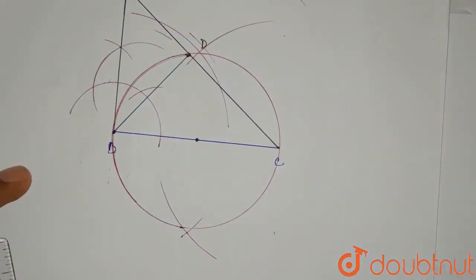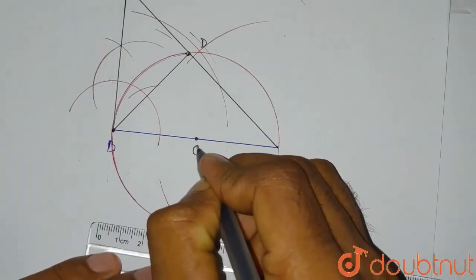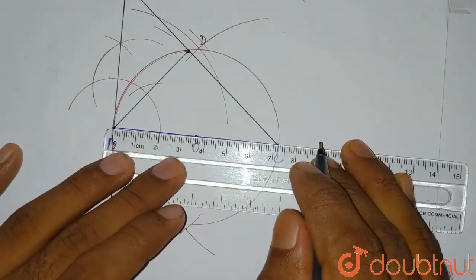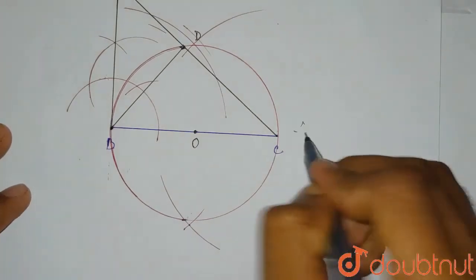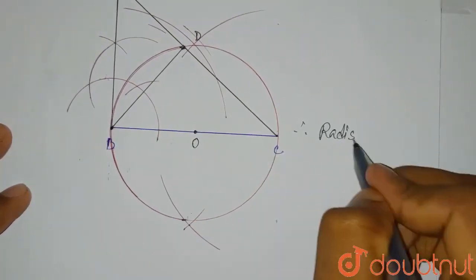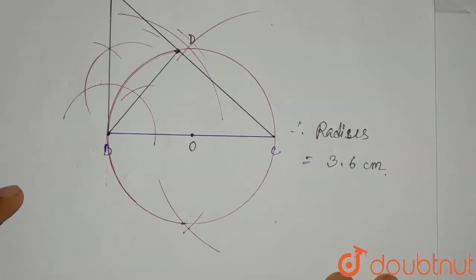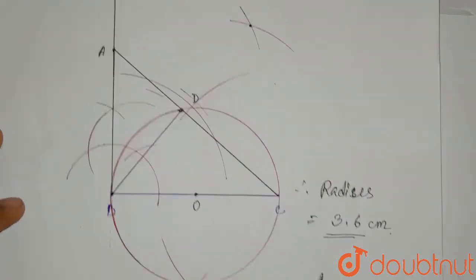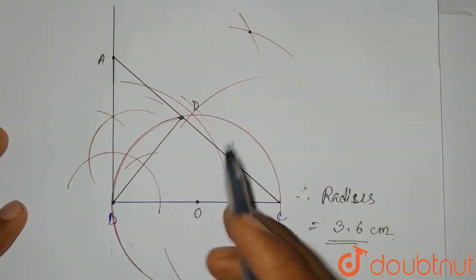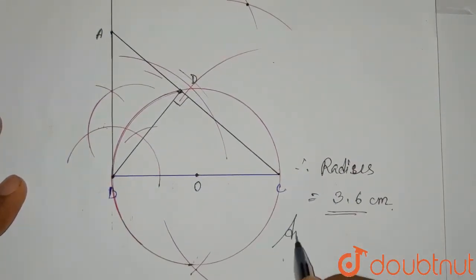This is the resultant circumcircle of triangle BCD. To find the radius, we measure from the center O to point B. The length OB is approximately 3.6 centimeters. Therefore, the radius of the circumcircle equals 3.6 centimeters. We have drawn triangle ABC, BD perpendicular to AC with angle BDA = 90 degrees, and the circumcircle — this is the complete solution.